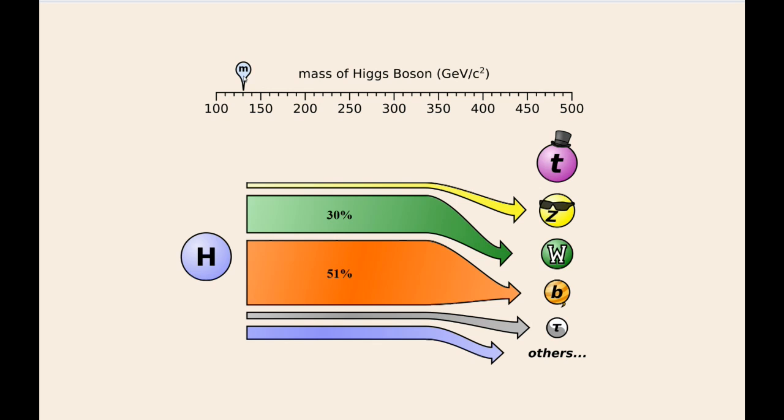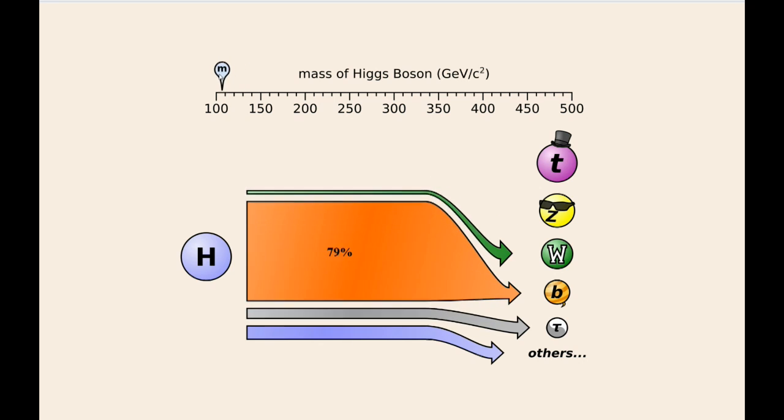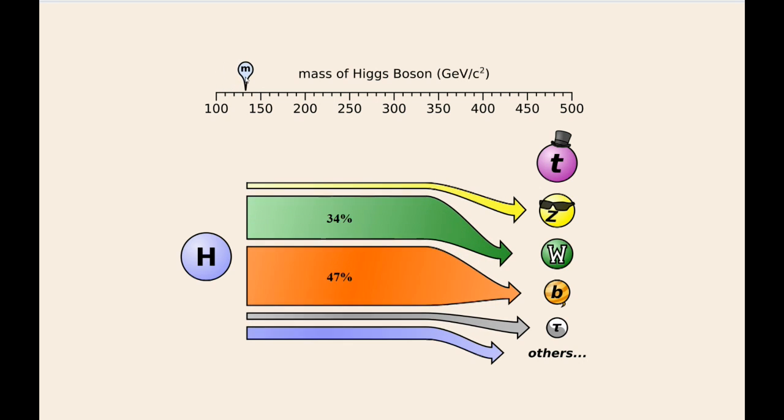For instance, if the mass is 100, we see that the Higgs boson will decay most likely into bottom quarks, with a smaller chance of tau leptons. The W boson is very unlikely. As I move the slider bar to a mass of about 130, we see the Higgs boson will decay into bottom quarks and W bosons with similar probability, and now there is some chance for it to decay into Z bosons.